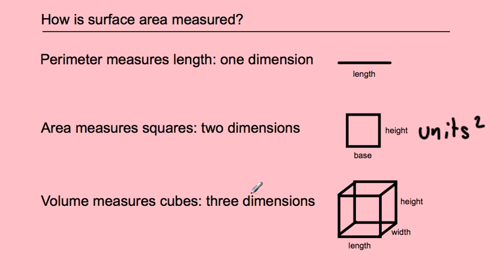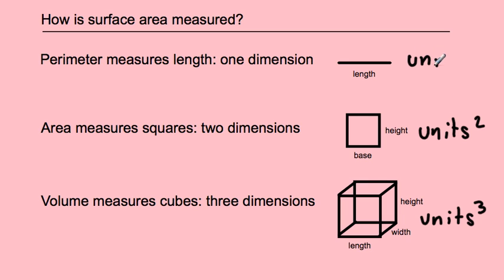Volume measures cubes, or three dimensions — that's length times width times height. In our answer we say however many units with an exponent of three, because it has three dimensions. And then perimeter is just units. So which one are we working with today? We are working with area, and so we're working with two dimensions — base times height or length times width. All of our answers are going to be labeled with a little two after the unit.